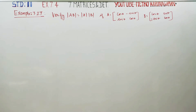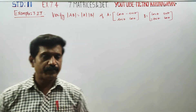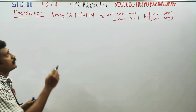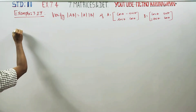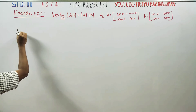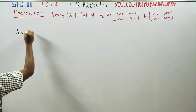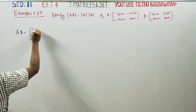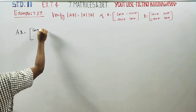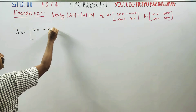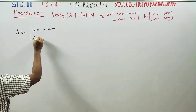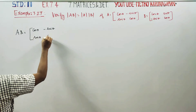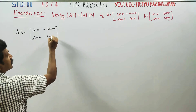Dear 11th standard students, in example 7.27, you have to verify the determinant of AB. First, I will multiply matrix A into matrix B. Matrix A is: cos theta, minus sin theta, sin theta, cos theta.